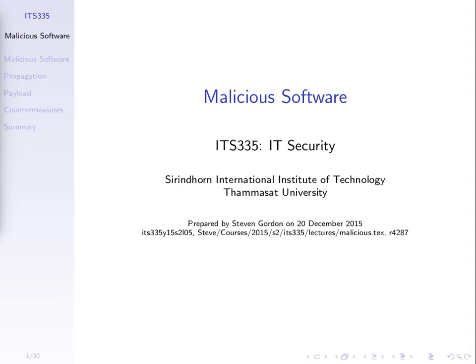This topic is looking at things from the perspective of the attacker and some of the things that can go wrong on our computer system. That involves executing malicious software — software that does something unexpected or bad on our computer system, shortened to malware. We'll discuss viruses, worms and other malicious software, the differences between them, and finish with a few ways of protecting against malicious software.